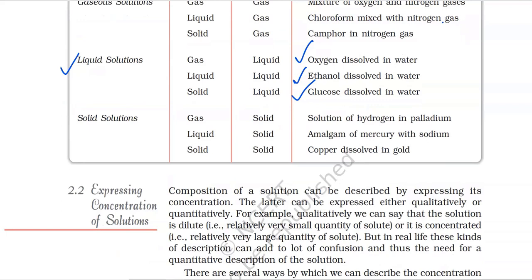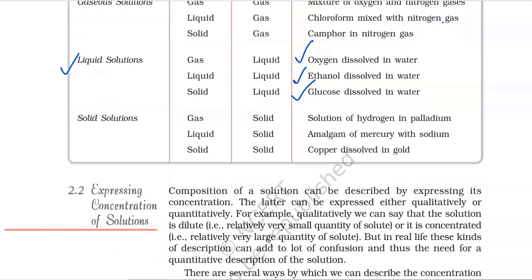The third type is solid solutions, where the solute is gas, liquid, or solid, and the solvent is solid in all three cases. Common examples are solutions of hydrogen in palladium, amalgam of mercury with sodium, and copper dissolved in gold.